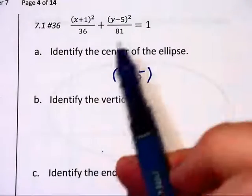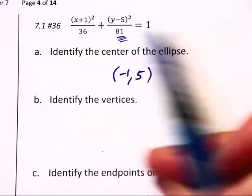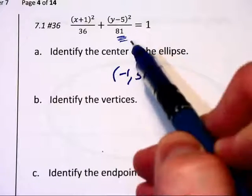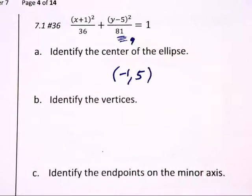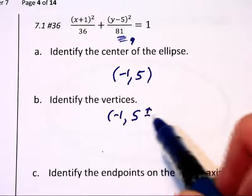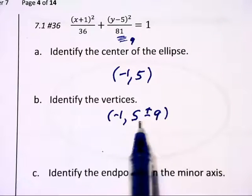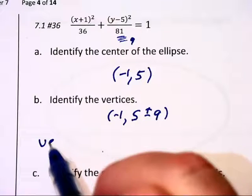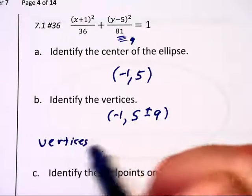We look at our two denominators and this time the 81 is larger which is beneath the y fraction. That tells us we are going to be moving 9 units up and down. Our vertices will be at (-1, 5 ± 9). I am adding this to the y value because that will control up or down. That tells us the vertices here will be at (-1, 14) and (-1, -4).